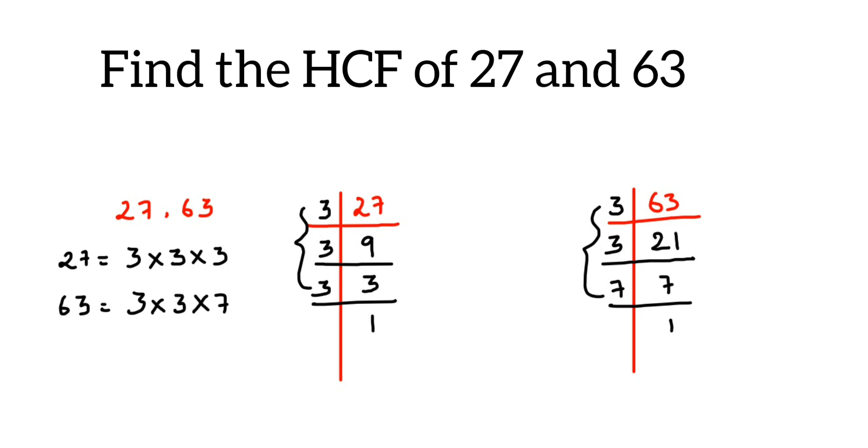Now once we have done this, pair up. So this is one and here I got one. Now for this 3 and for this 7, we don't have any pairs, just leave it like that. So HCF of 27 and 63 will be from each pair you take one number. So from here I'll take one 3 and from here I'll take another 3. So 3 times 3 is 9, so HCF of 27 and 63 is 9. That's it.